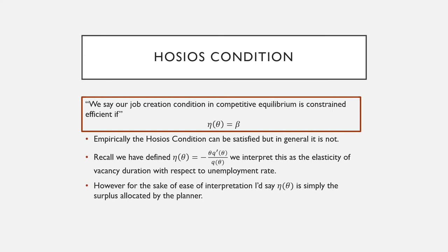This brings us to the HOSIOS condition. We say that our job creation condition in competitive equilibrium is constrained efficient if we have η(θ) equal to beta. Empirically, the HOSIOS condition can be satisfied, but in general it's not.